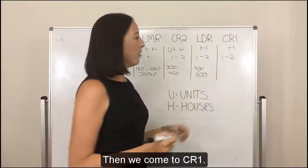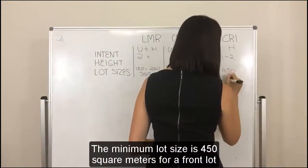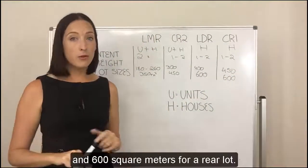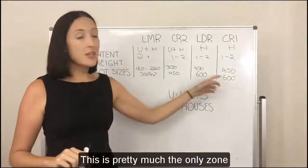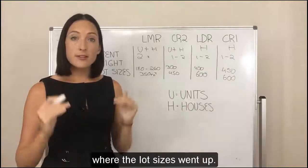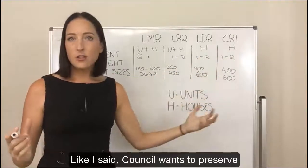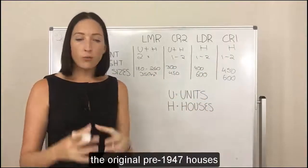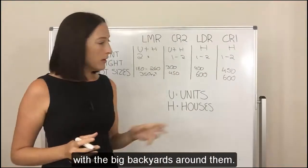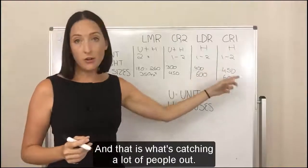Then we come to CR1. The minimum lot size is 450 square metres for a front lot and 600 square metres for a rear lot. This is pretty much the only zone under City Plan 2014 where the lot sizes went up. It comes back to the intent — council wants to preserve the original pre-1947 houses with the big backyards around them, and that's why they've gone so high here.